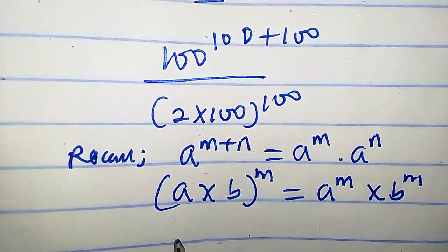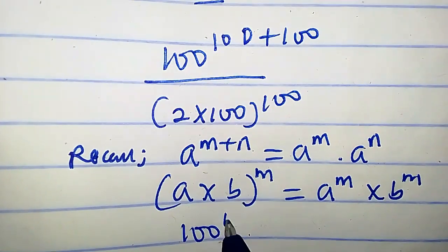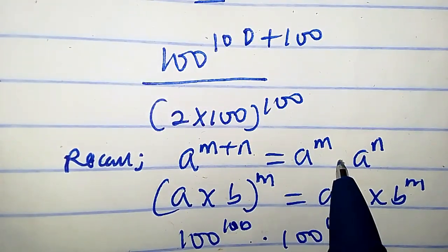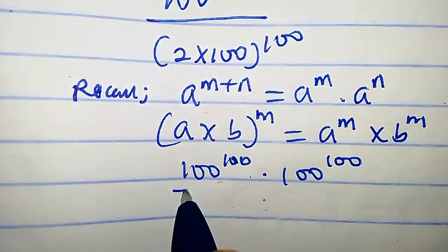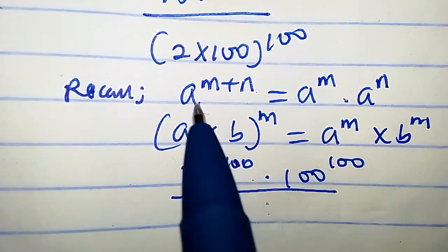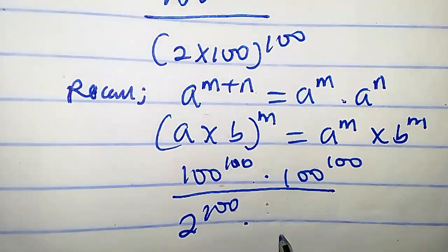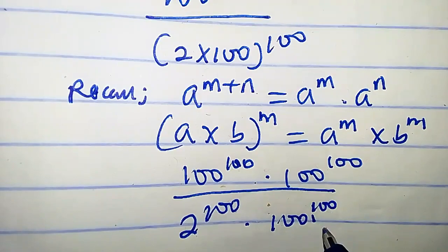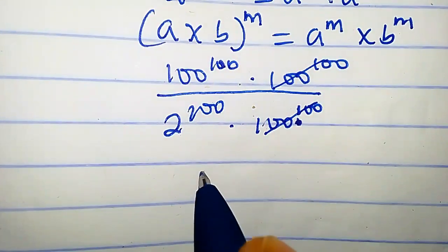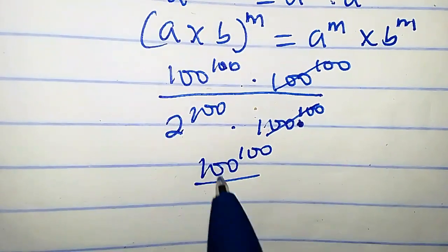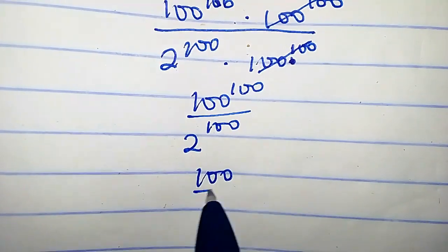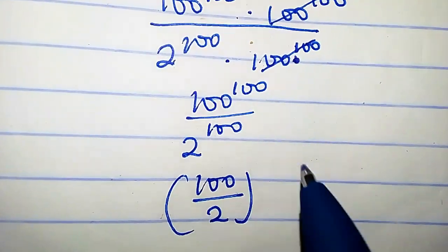We are going to impose each of these properties. For the numerator, using the first property, we get 100 raised to power 100 times 100 raised to power 100. For the denominator, we impose the second property to get 2 raised to power 100 times 100 raised to power 100. Clearly the 100 raised to power 100 terms cancel, leaving 100 raised to power 100 over 2 raised to power 100.